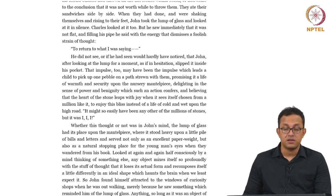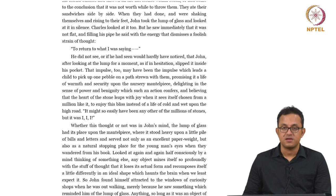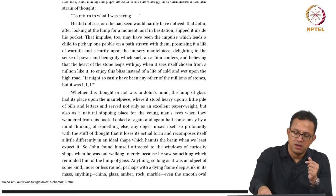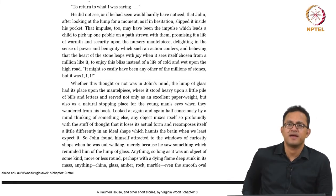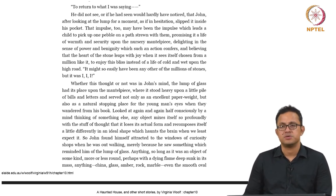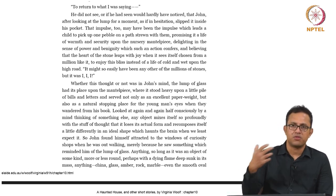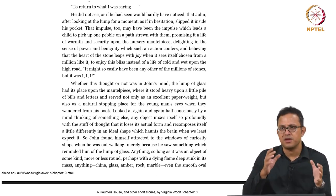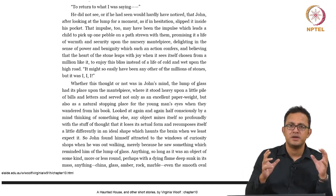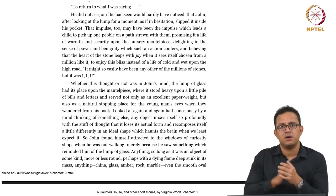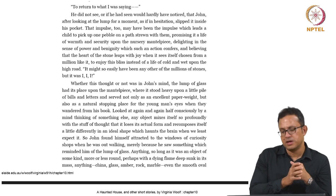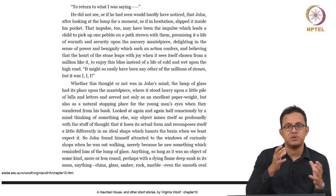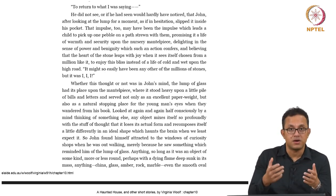Looked at again and again half consciously by a mind thinking of something else, because any object mixes itself so profoundly with the stuff of thought that it loses its actual form and recomposes itself a little differently in an ideal shape which haunts the brain when we least expect it. Notice the engagement between the human brain and the object here. The human engagement is abstract and affective — looking at the object shapes the mind, and equally, the imagination shapes and reshapes the object. This takes place through a complex combination of abstraction and materiality.